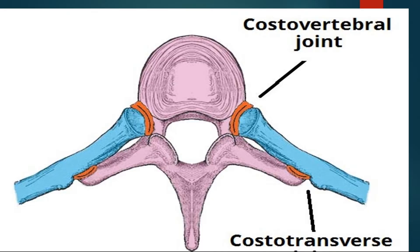There are two costovertebral joints. One joint is between the head of the rib and the vertebra, and the other joint is between the neck of the rib and the vertebra. The joint between the head of the rib and the vertebra is called the costocorporeal joint, and the joint between the neck of the rib and the transverse process of the vertebra is called the costotransverse joint.